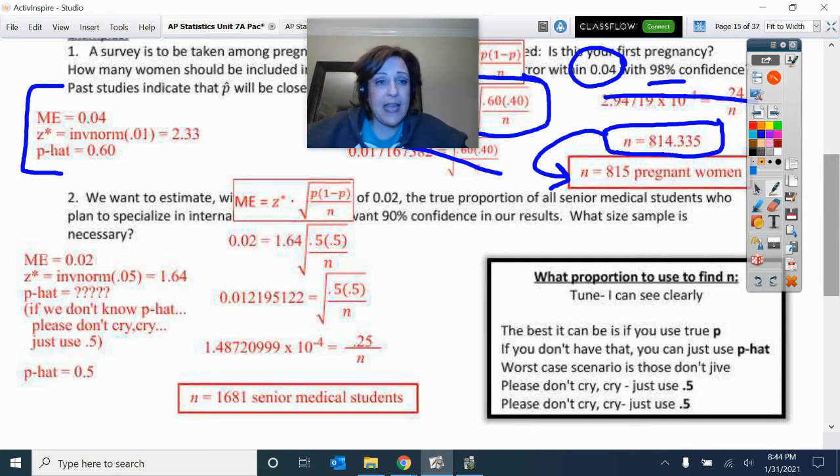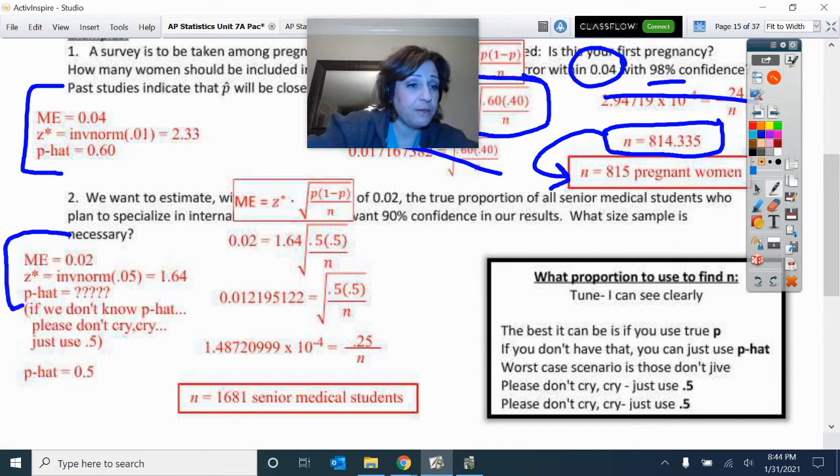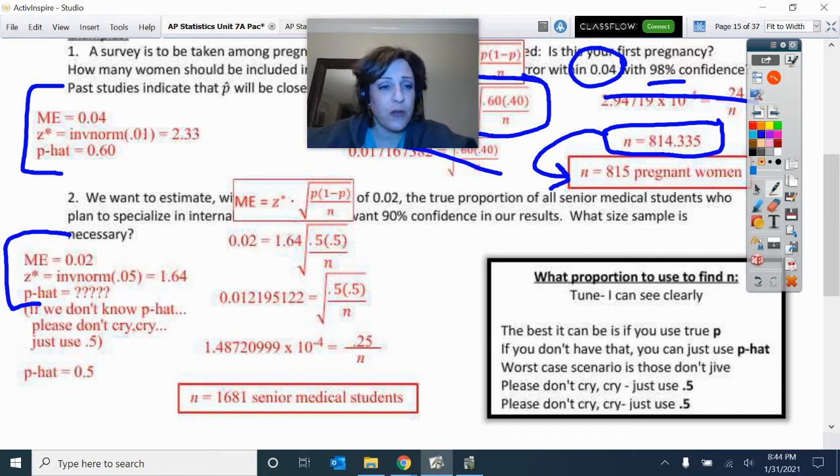If I have you do that, look at this problem. We want to estimate with a margin of error of 0.02 the true proportion of all senior medical students who plan to specialize in internal medicine with a confidence of 90% in our results. What sample size is necessary? So if I come over here to start listing my information, I know the margin of error is 0.02. Critical value for 90% confidence is 1.64. But they did not tell me a P hat. They did not tell me a level that I knew from past results.